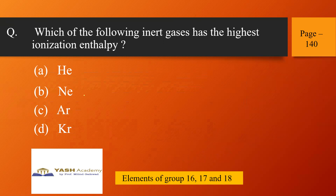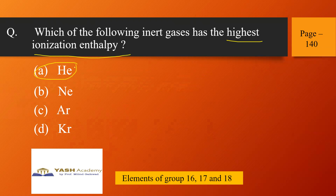Next, from elements of group 16, 17 and 18, page 140 — which of the following inert gases has the highest ionization enthalpy? Options: helium, neon, argon, krypton. As we move from top to bottom, atomic size increases, and ionization enthalpy — the energy required to remove an electron — decreases. Since helium has the smallest atomic size, it has the highest ionization enthalpy. Helium is the correct answer.